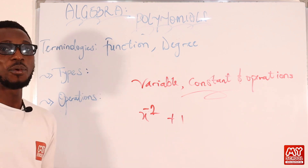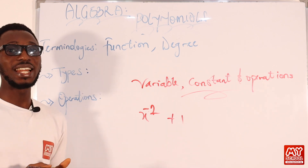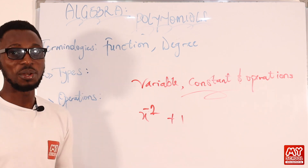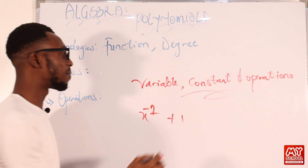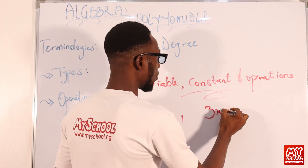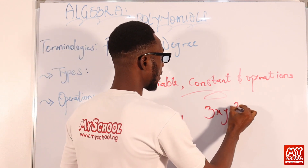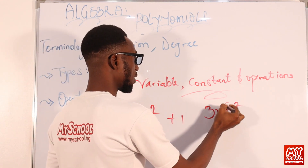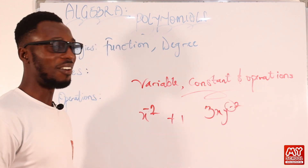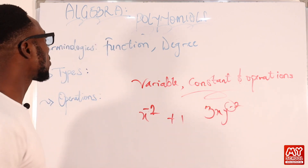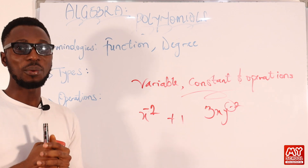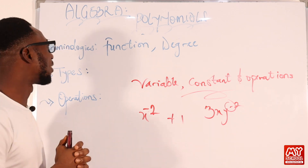So if you have something like 3x times y raised to the power of minus two, because of that minus two, this is not a polynomial. Now let's go to some terminologies we should get familiar with when working with polynomials.